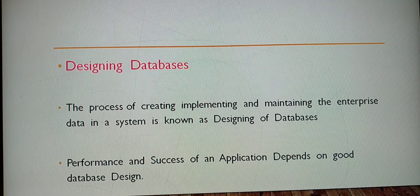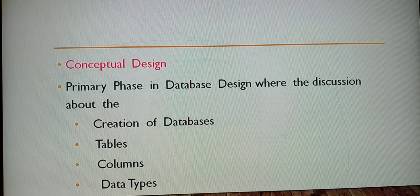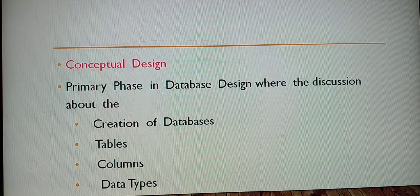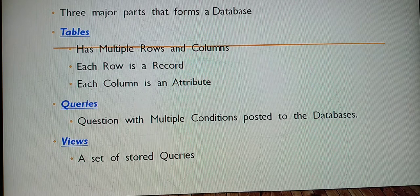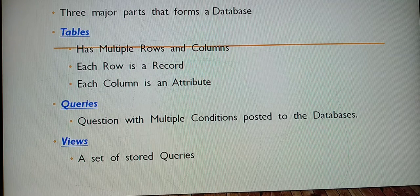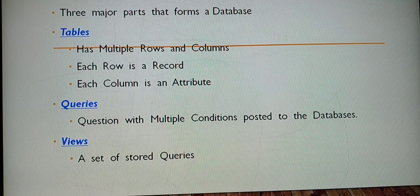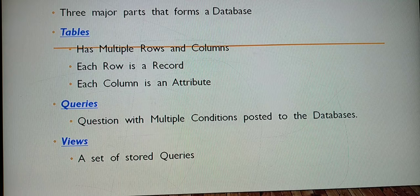This is a two-mark question. Next is conceptual design - the primary phase in database design where discussions happen about the creation of databases, tables, columns, and data types. The three major parts that form a database are table, queries, and views. A table has multiple rows and columns - each row is a record and each column is an attribute. Query asks questions with conditions. A view is a set of stored queries. This is a three-mark question.